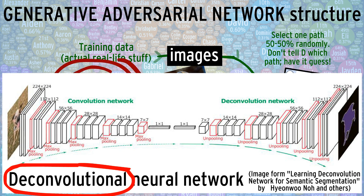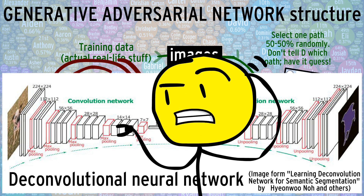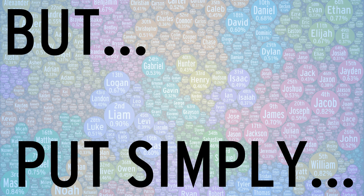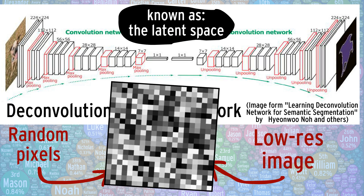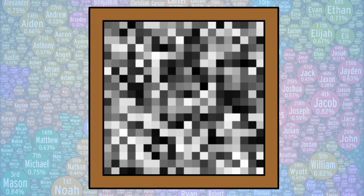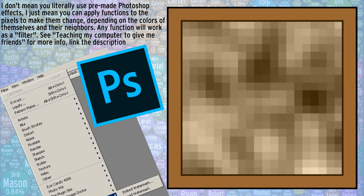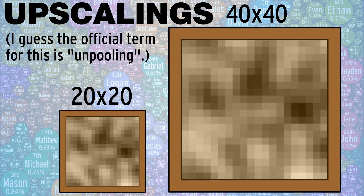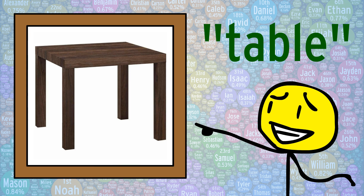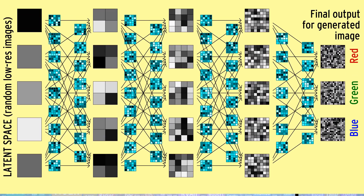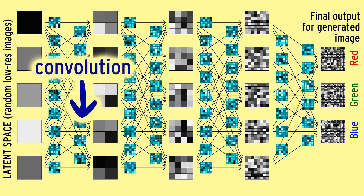If we want our generator to produce images, we can use a deconvolutional neural network. I could be entirely wrong with how this works, but put simply, imagine starting with a low-res image of random pixels. Then, gradually apply specific Instagram filters, Photoshop effects, and upscalings until you magically get an image of some object. It takes a very complicated, fine-tuned network of convolutions to get this to work.